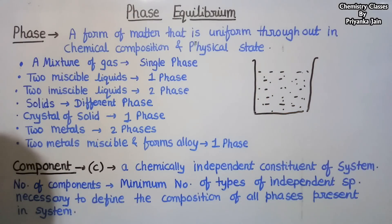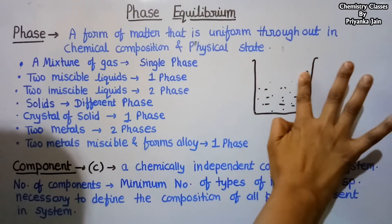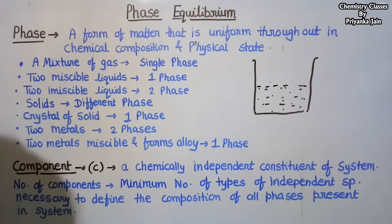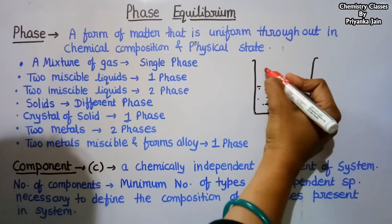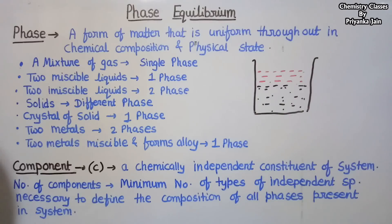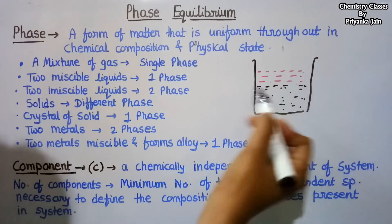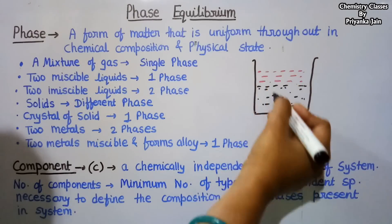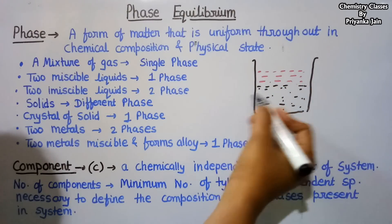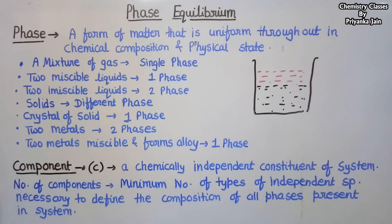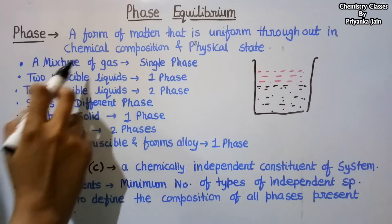Another condition may arise: if there is water in half of the beaker and we add oil to it, there will be two different layers — one of water and one of oil. Both layers are separable from each other and we can see them. So these are two different phases, because both have different physical states and different chemical compositions. There are two phases here.